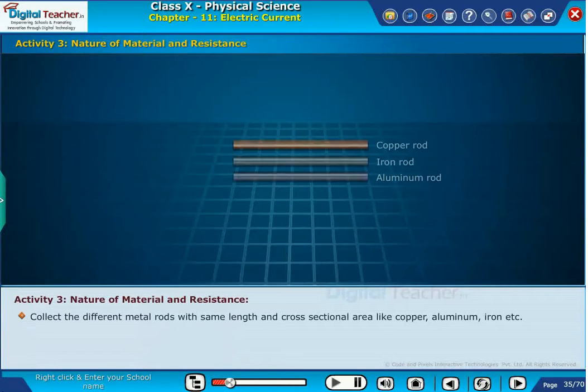Collect the different metal rods with same length and cross-sectional area like copper, aluminum, iron, etc.